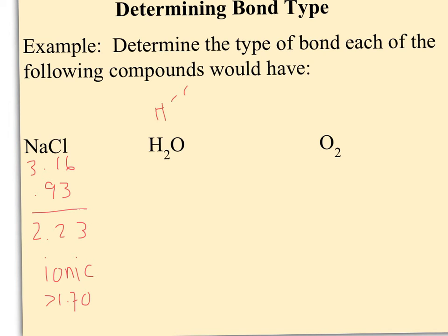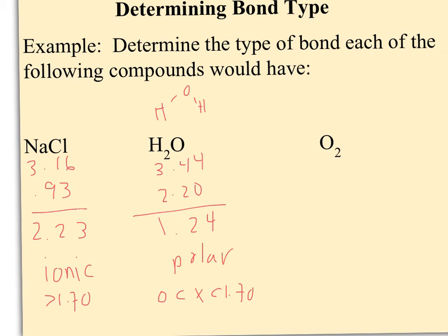For H₂O, oxygen is the center atom with two hydrogens bonded to it, so you only need to calculate once. Hydrogen's electronegativity is 2.20 and oxygen's is 3.44, giving a difference of 1.24. That's greater than 0 but less than 1.7, so this is a polar covalent bond — in fact, highly polar since it's close to 1.7. For O₂, oxygen is 3.44 and you subtract itself, giving 0. So O₂ is nonpolar, or pure covalent — truly equal sharing.